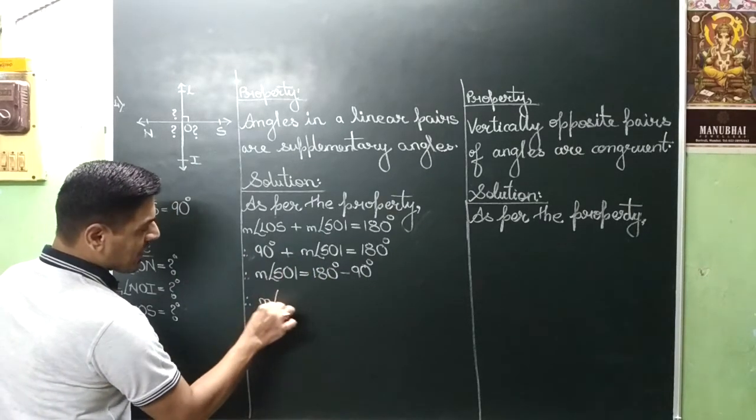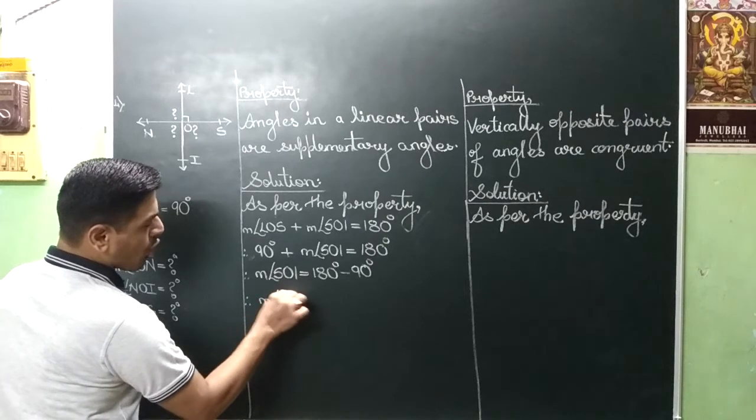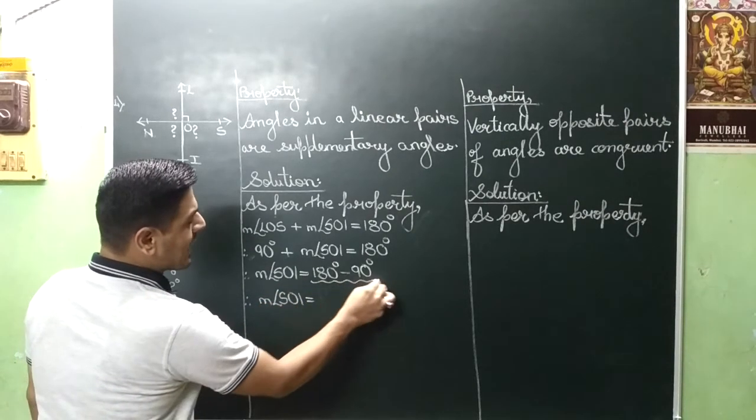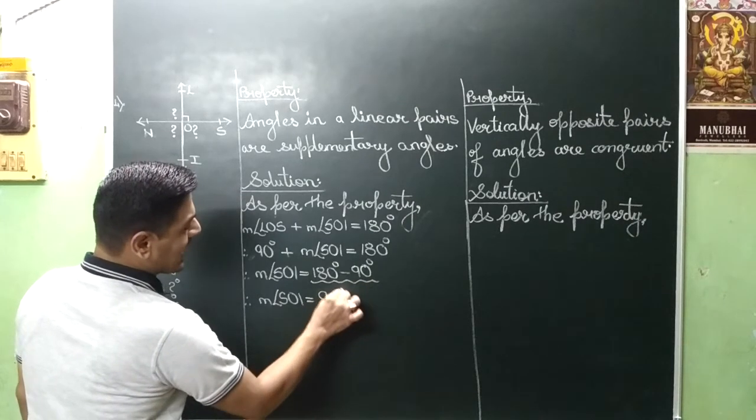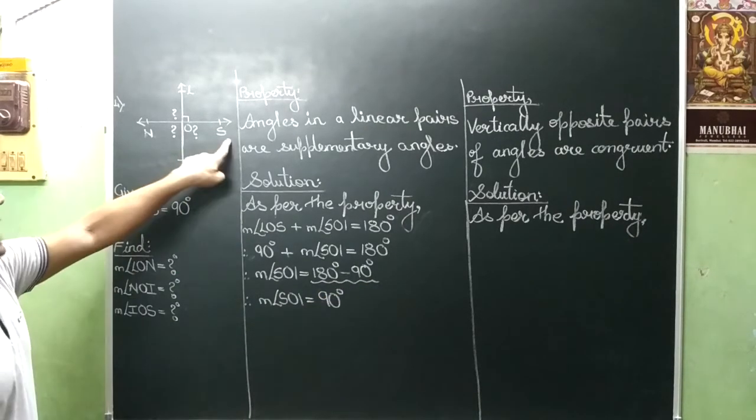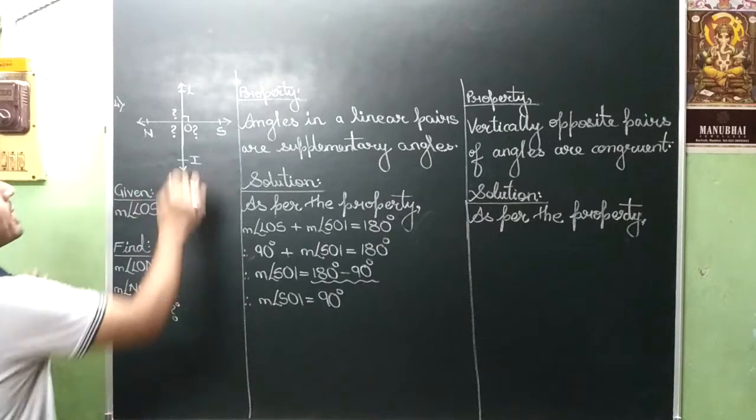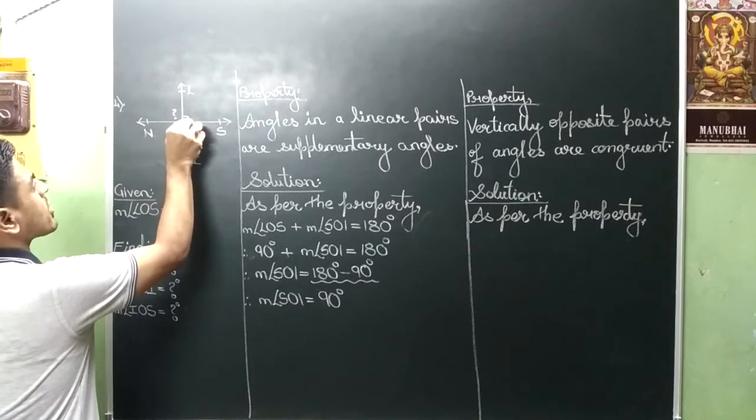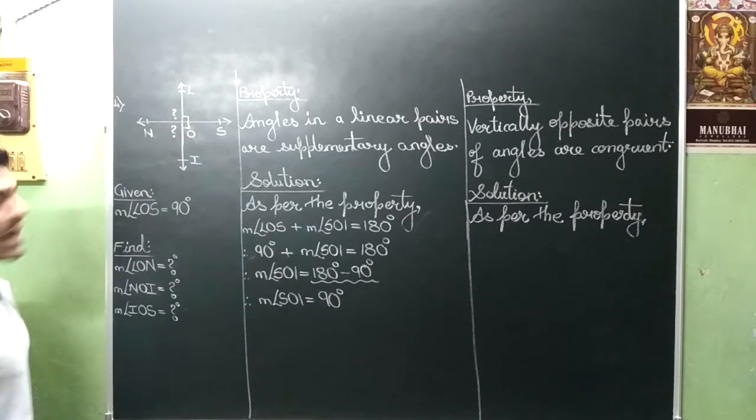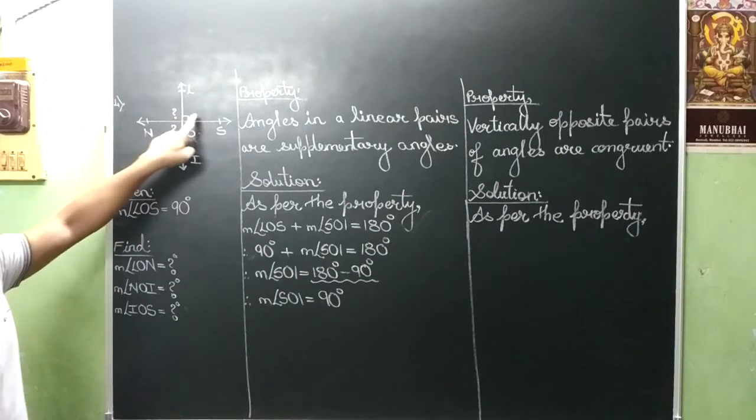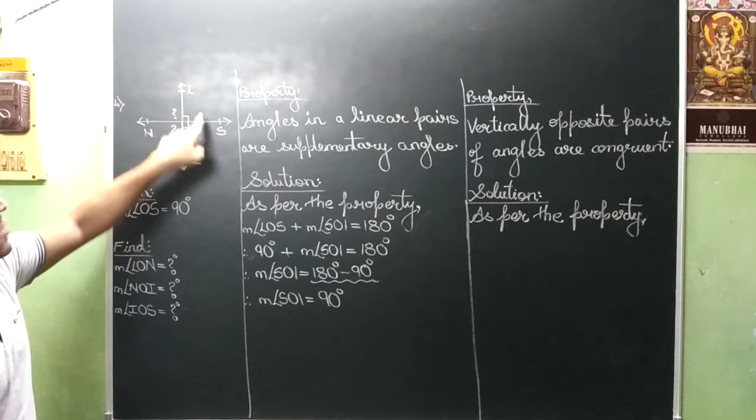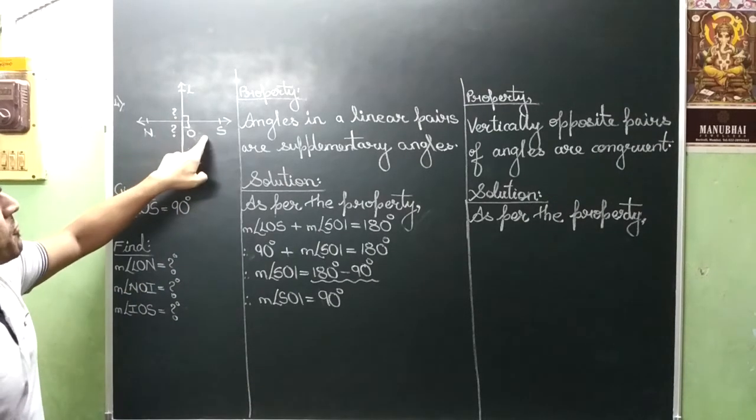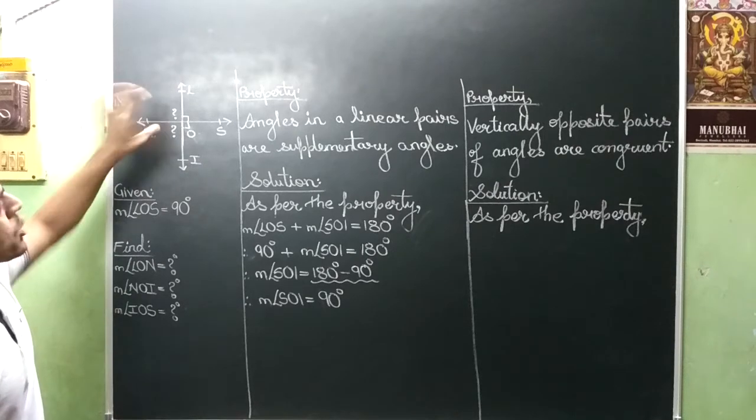So measure angle SOI is equal to 180 degree minus 90 degree, answer will be 90 degree. So SOI is equal to 90 degree. Now we will put the symbol of 90 degree. Correct? So now we have two angles to find. One is given and one has defined, and the remaining two is found.